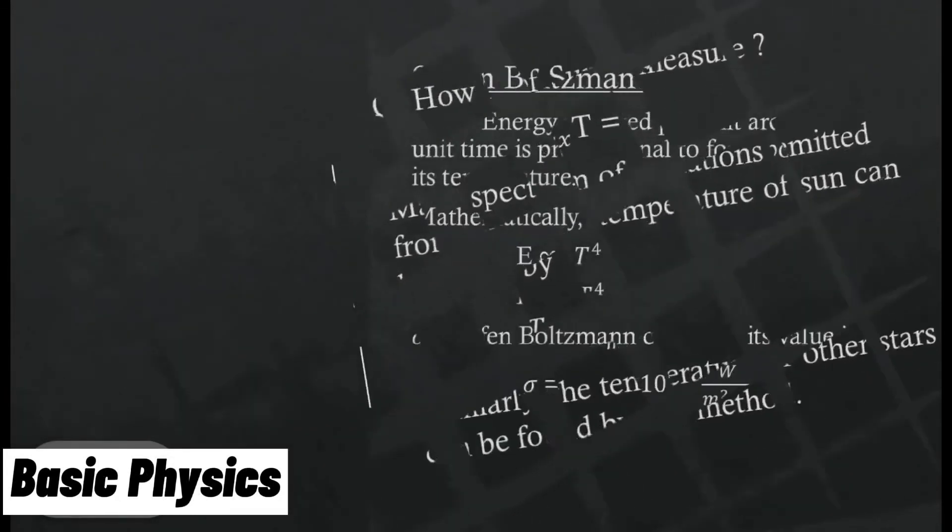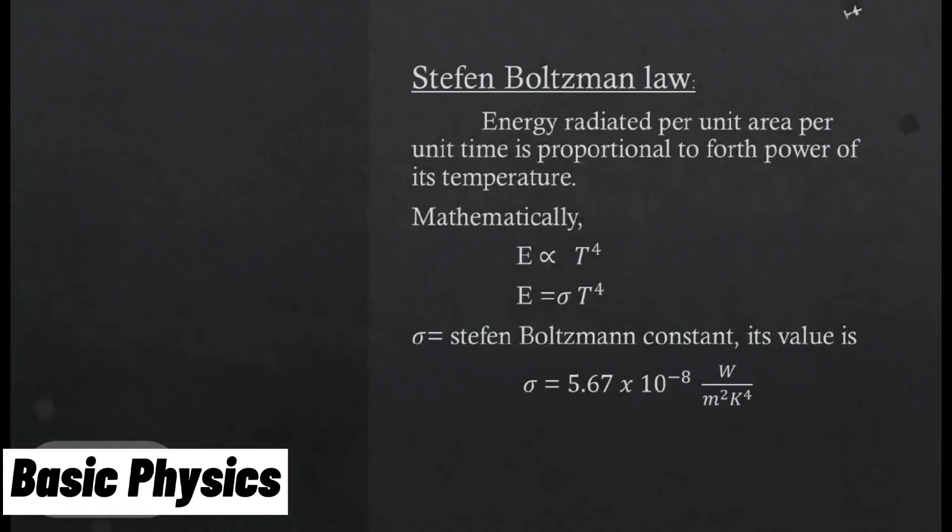Stefan Boltzmann law. Energy radiated per unit area per unit time is proportional to fourth power of its temperature. Mathematically, E is proportional to T to the fourth power. E equals sigma T raised to power 4, where sigma equals 5.67 multiplied by 10 raised to minus 8 watt per meter square Kelvin to the fourth power. Thanks for watching.